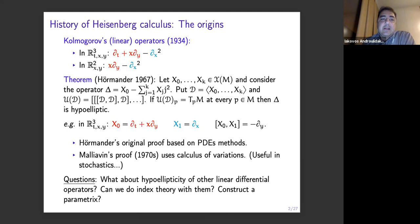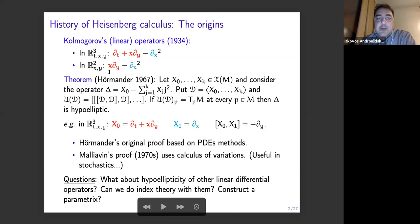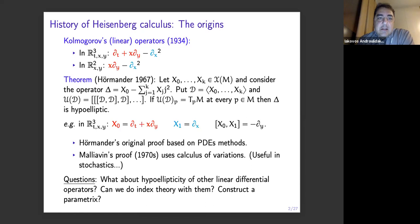So where do we come in? The questions we want to ask: this is a pretty general theorem for sums of squares operators, but we wanted to address the hypoellipticity of linear differential operators as well, beyond sums of squares. And to ask if we can do index theory with them and if we can construct the parametrics. Another point is that in R², this operator is quite singular — there is this x∂_x, there's a vanishing at the y-axis somehow. Hörmander was able to overcome this singularity in his proof, but there is a singularity involved in this business.